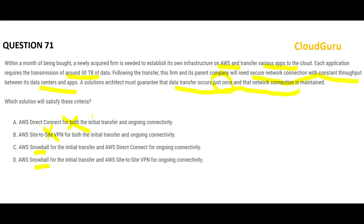Both options C and D use Snowball for initial transfer. The difference is C uses Direct Connect for ongoing connectivity, and D uses site-to-site VPN. The question requires a secure network connection with constant throughput. Site-to-site VPN cannot give constant throughput — it is not as stable as Direct Connect. Therefore, C is the correct answer.